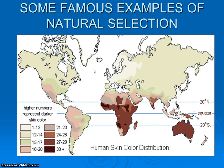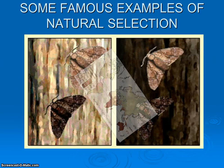We know that skin color is a result of melanin production, which has a protective value — it protects our cells from ultraviolet radiation. So it makes sense that individuals with more melanin production and darker skin would have a beneficial trait when living in areas with high bombardment of ultraviolet radiation, which is interesting.